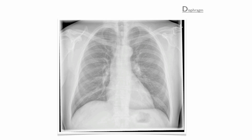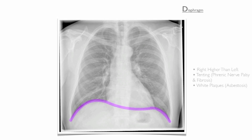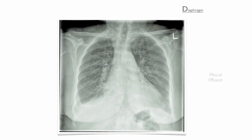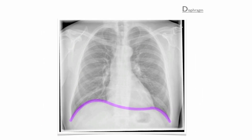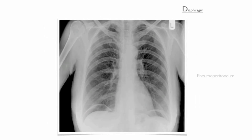Diaphragm: in the normal radiograph, the right hemidiaphragm is superior to the left because it is displaced upward by the liver. You should look for tenting of the diaphragm caused by phrenic nerve palsy or fibrosis, and white plaques caused by asbestosis. Assess both costophrenic angles — blunting occurs in small pleural effusions. Also look below the diaphragm at the gas bubble in the stomach, and for any free air beneath the diaphragm that suggests either a perforated stomach, bowel or recent surgery.